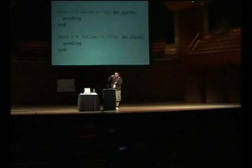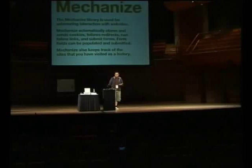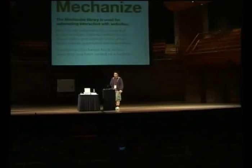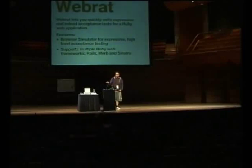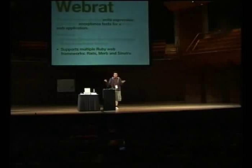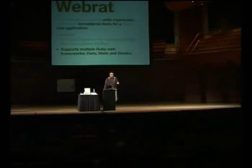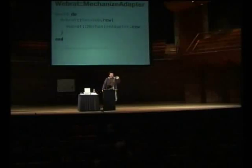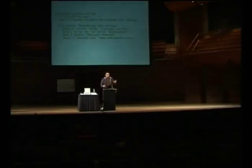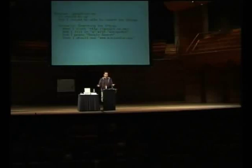You have stuff within these particular blocks that do the interaction with a website or some other system. People have probably also heard of Mechanize, especially as we're all sysadmins here. The thing that we care about is interacting with and automating the interaction of websites. In the Ruby world we also have this other library called WebRat. WebRat simply lets you write expressive acceptance tests for web applications and it supports multiple Ruby web frameworks — Rails, Merb, Sinatra. But not a lot of people know that there's actually a Mechanize back-end for WebRat. So within Cucumber, when you're setting up your Cucumber environment, you can say I want to use a Mechanize adapter for WebRat. You can point it at the actual google.co.nz and test that it's behaving the way that you expect.